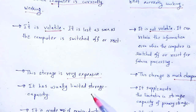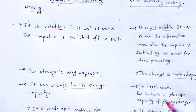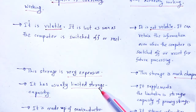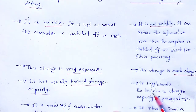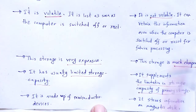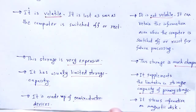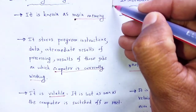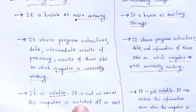Primary storage has usually limited storage capacity. Secondary storage supplements the limitation in storage capacity of primary storage. If the primary storage is filled out, then secondary storage is helpful to maintain the function. Primary storage is made up of semiconductor devices, whereas secondary storage stores information in magnetic disks — that is the basic difference between primary and secondary storage.